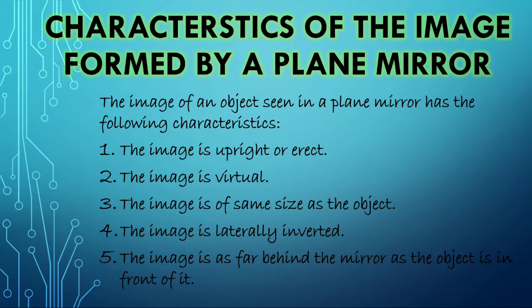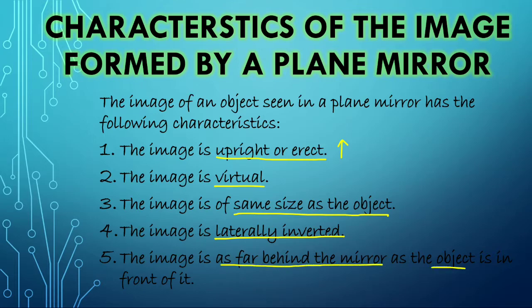The image of an object seen in a plain mirror has the following characteristics. The image is upright or erect, that means the image formed in a plain mirror is straight, just like the object. The image is virtual, means it cannot be obtained on screen. The image is of same size as the object. The image is laterally inverted. The image is as far behind the mirror as the object is in front of it.